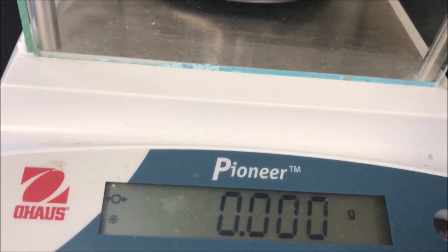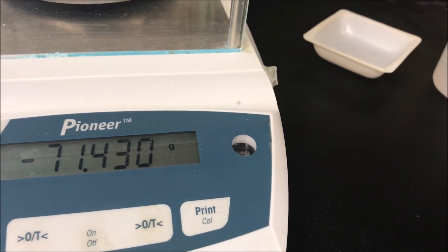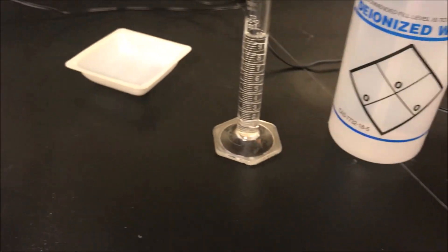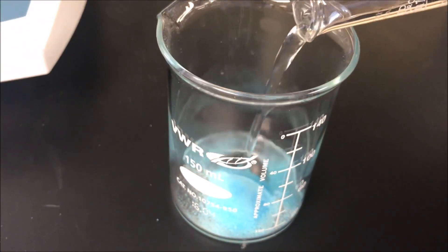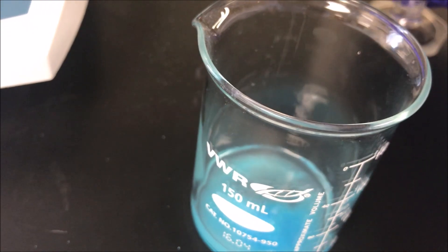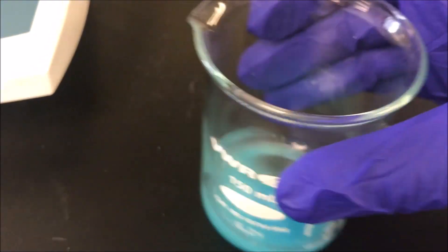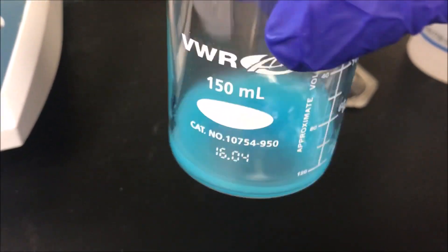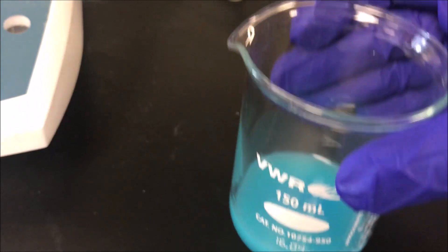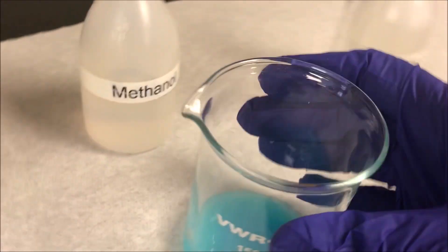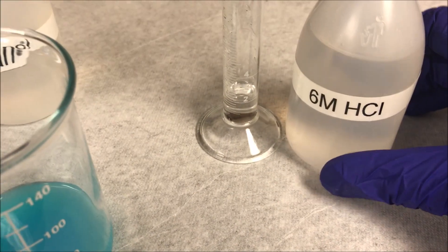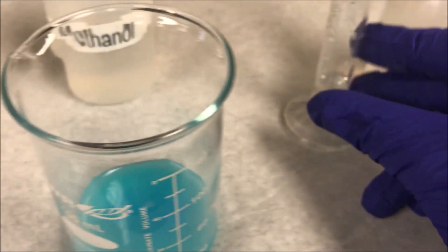Now take out the beaker and add 10 ml of deionized water. You will get a blue solution. To this solution, add 2 ml of 6 molar hydrochloric acid.